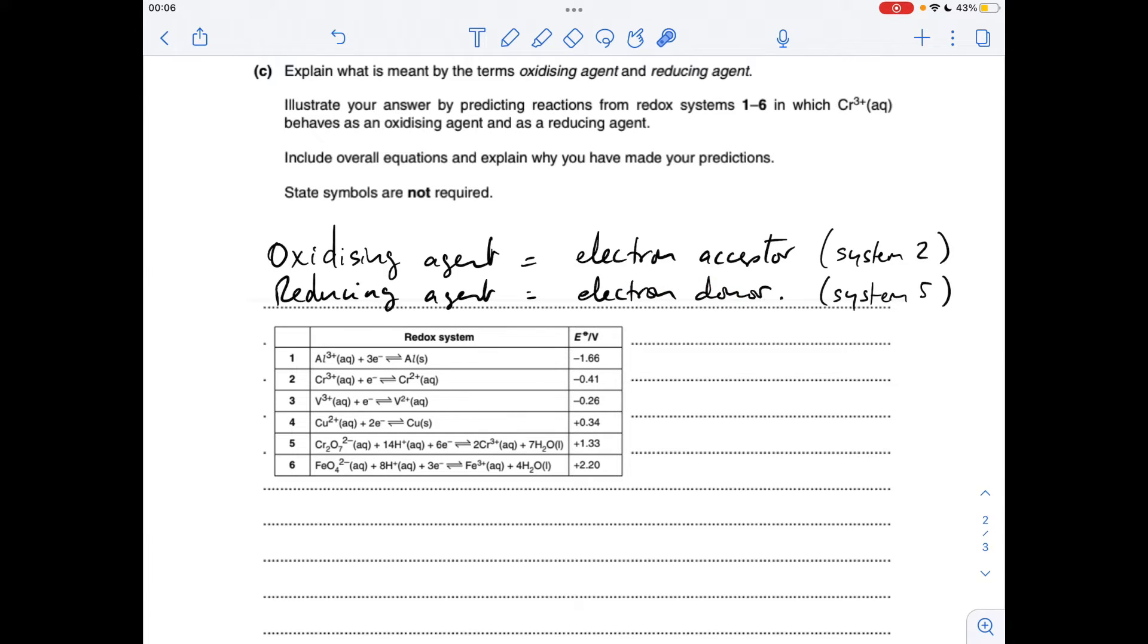The question focuses on chromium 3+ acting as each of these. In system 2, you can see that the chromium 3+ ion is accepting electrons, so that's the system we're going to use to illustrate it being an oxidizing agent. System 5 is where the chromium 3+ ions are donating electrons, so we'll use that one to explain the reducing agent. Starting with oxidizing agents or system 2, you can see the electrode potential is -0.41 volts.